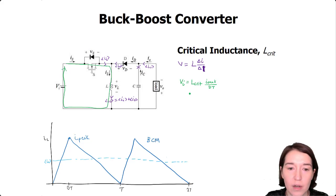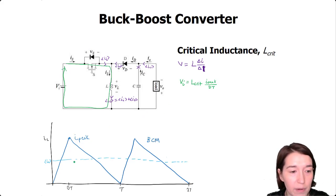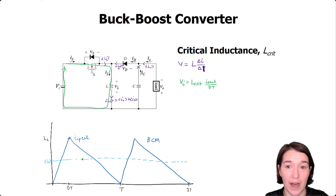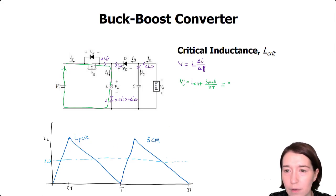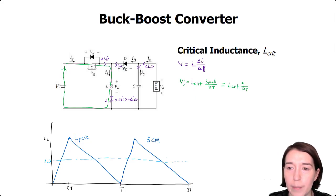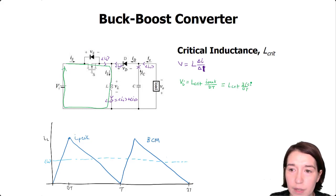What is I_peak? I_peak is simply double the average value of the inductor current. So we still have L_crit over dT, but this becomes two times the average inductor current, which is the average input current plus the average output current.